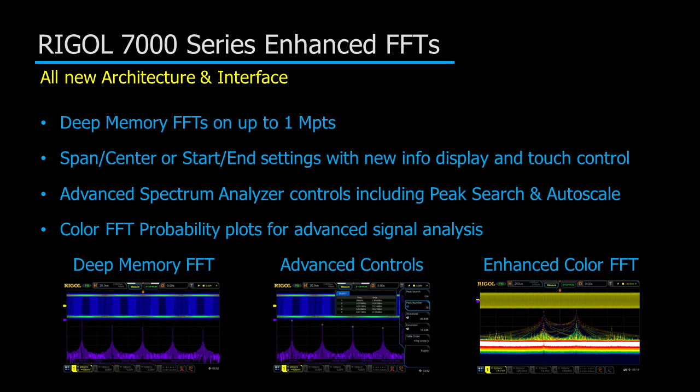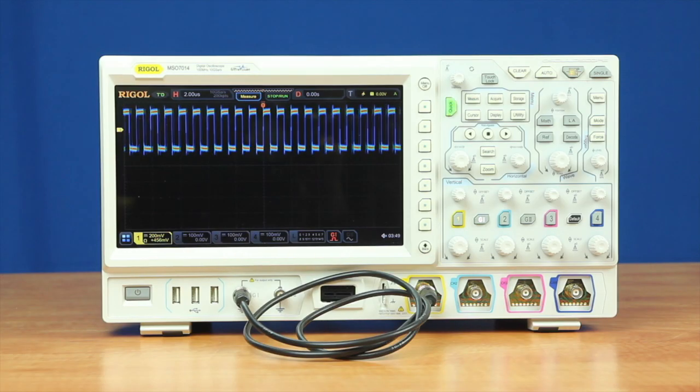Finally, the addition of Kellar FFT probability plots makes advanced analysis usually reserved for a spectrum analyzer possible on your oscilloscope. Let's take a look at how each of these advances improves debugging with the scope.